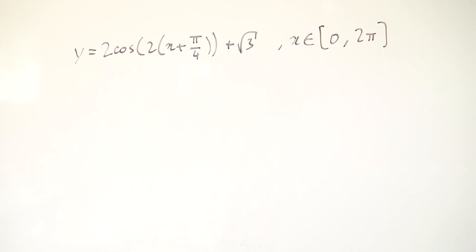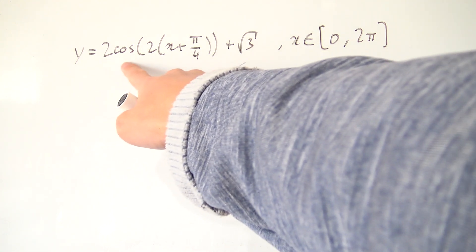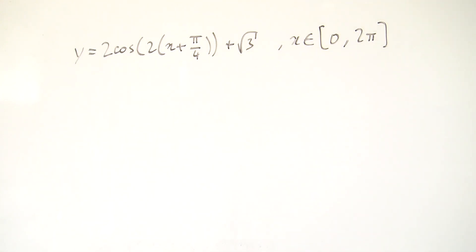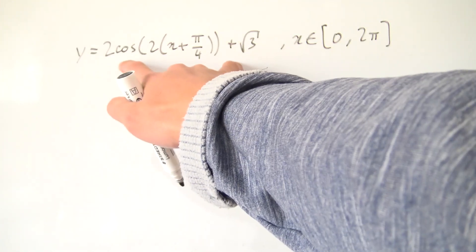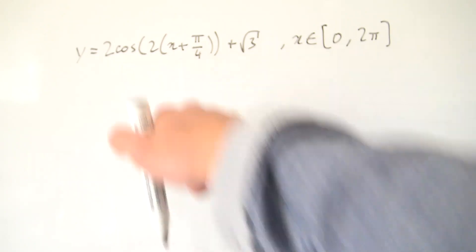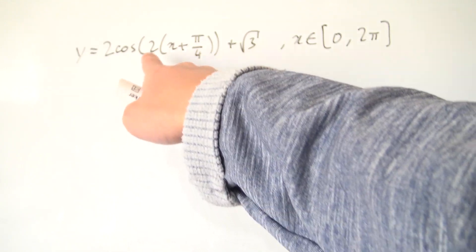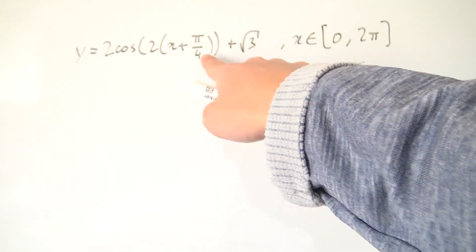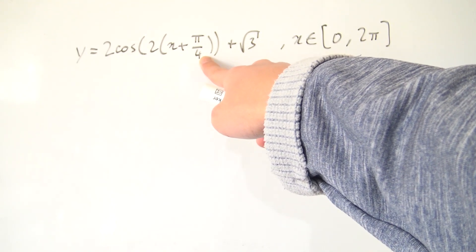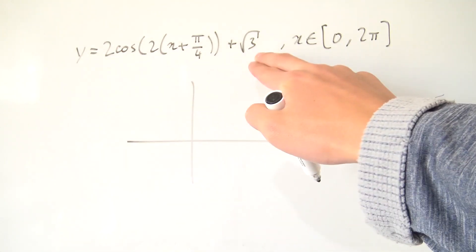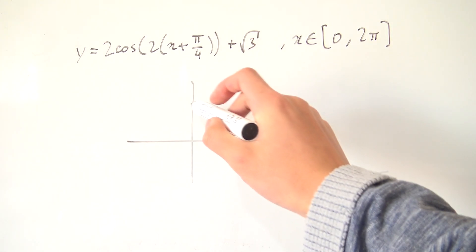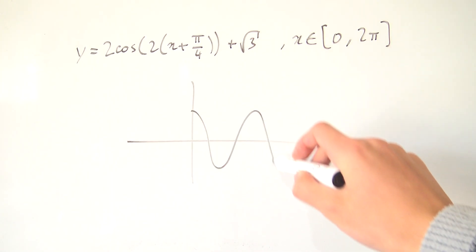Hello everybody, and today we're going to be looking at how we can sketch some more complicated trig graphs. We have 2 times the cosine of all this junk right here plus root 3. These can be quite a headache to solve, but I've thought of a way to make it less of a headache. We're really unsure of where to start because one of the most scary things is the inside of this cosine — not only do we have a dilation factor, we also have a phase shift, an amplitude change, and a vertical translation. But we all know how our original cosine graph looks.